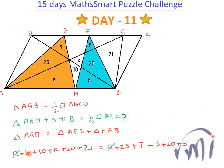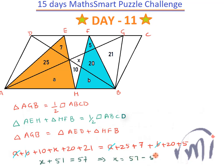Solving this equation, A cancels from both sides and B also cancels. We're left with X plus 10 plus 20 plus 21 — that is X plus 51 — equal to 25 plus 7 plus 20 plus 5, which is 57. Therefore, X equals 57 minus 51, which is 6. The area of the shaded region is 6 square units.